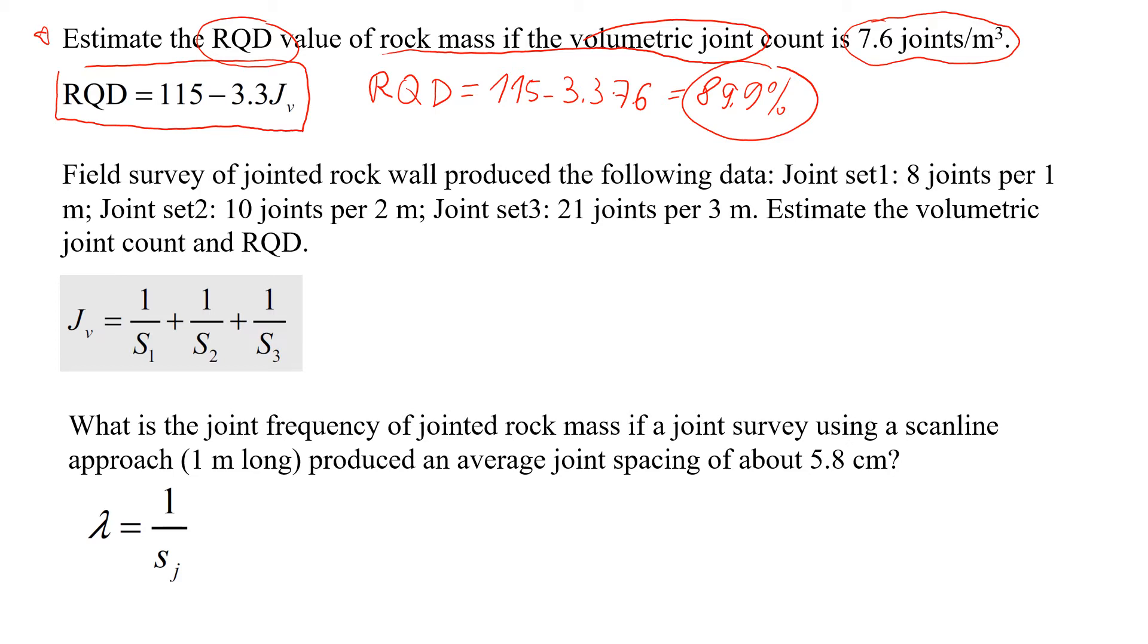Okay, let's move on and look at another example. In this example, again we have data from field surveys of jointed rock wall, and there will be three joint sets. So what we did, we measured a number of joints and the distance for each of the sets. And this is the data.